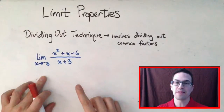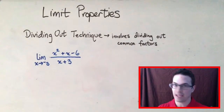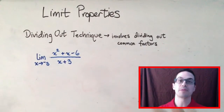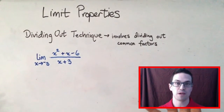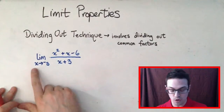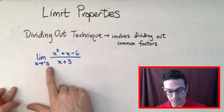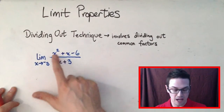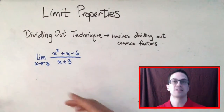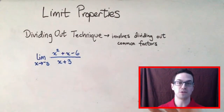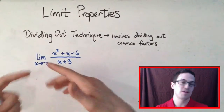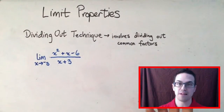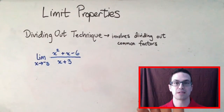First thing I'm going to think about is: can I use direct substitution? Because that would be the easiest possible way of doing that. So I'm going to see if I can plug in negative three for x and see if it's continuous. If it's continuous, then I can just plug it in and find the limit through direct substitution.